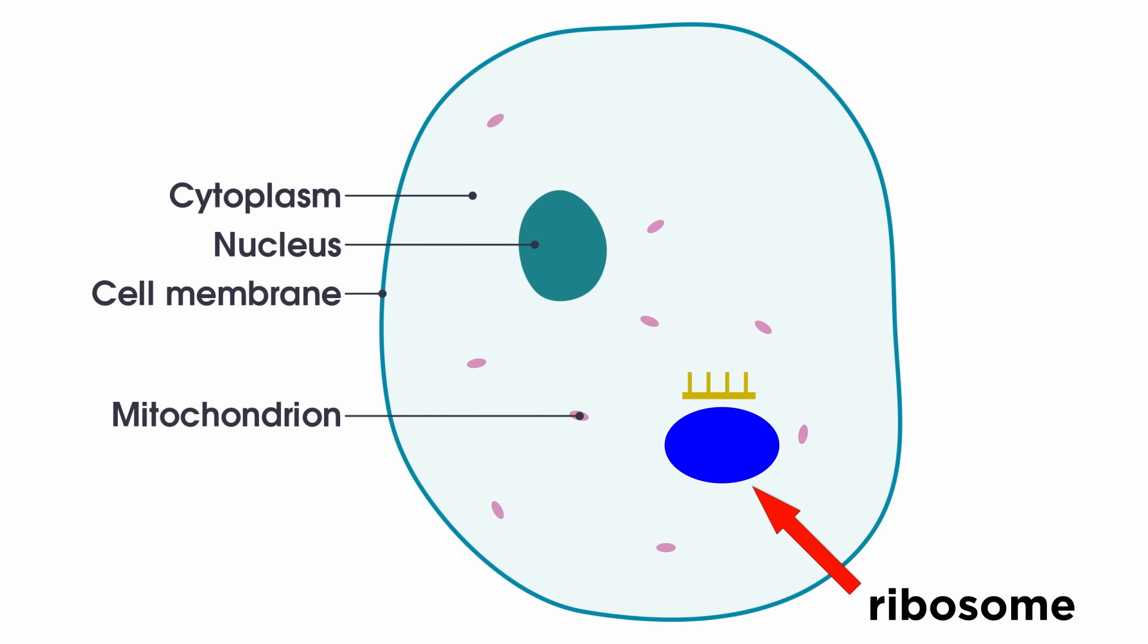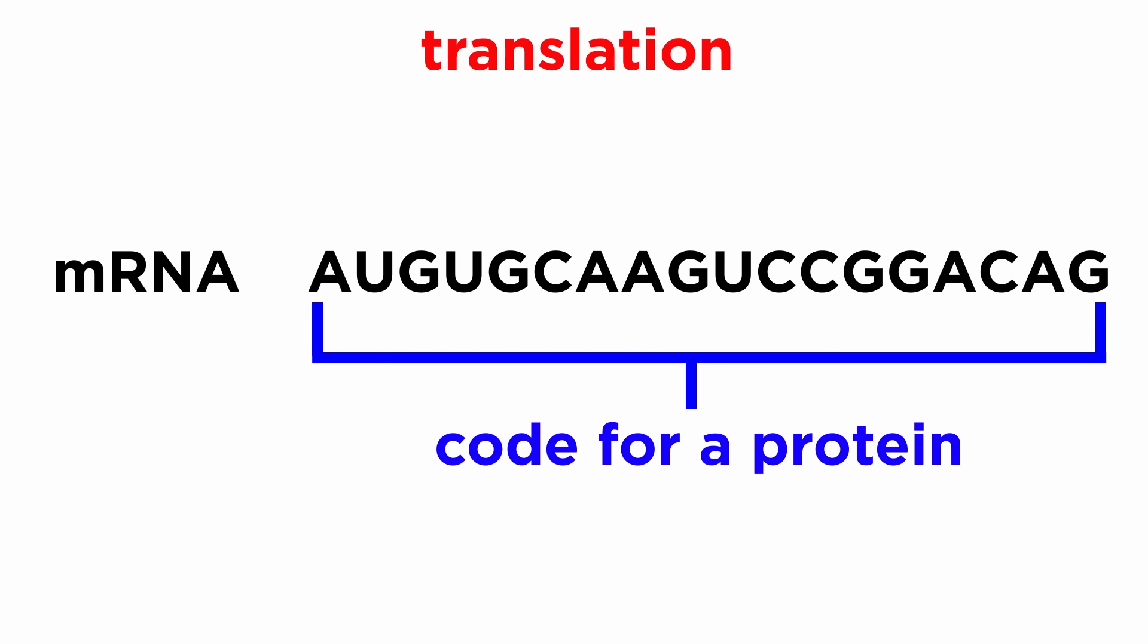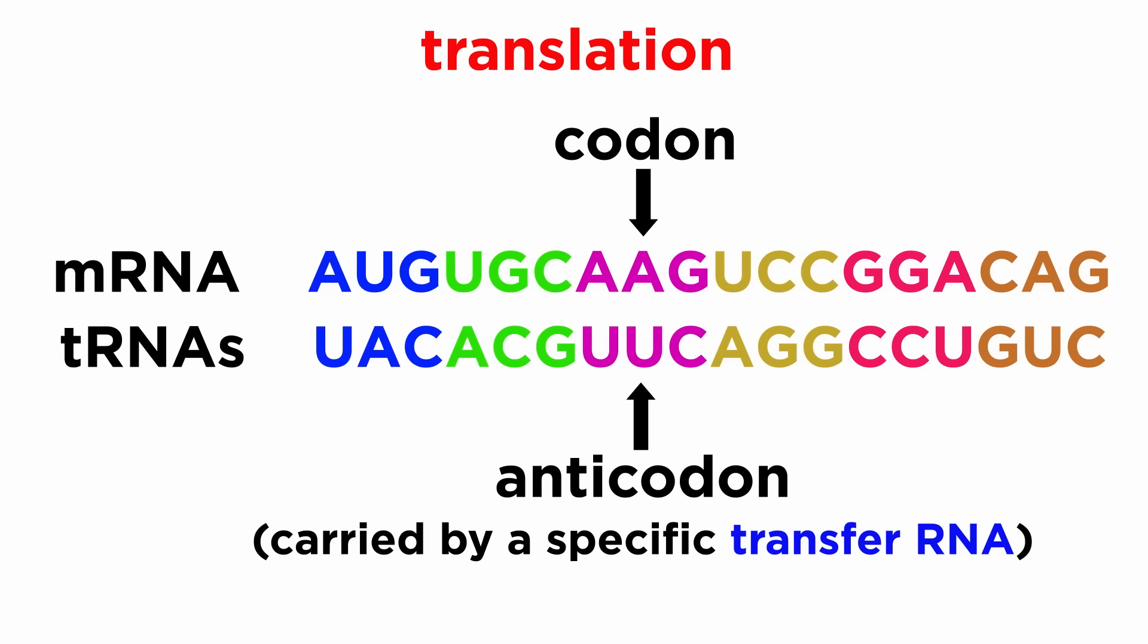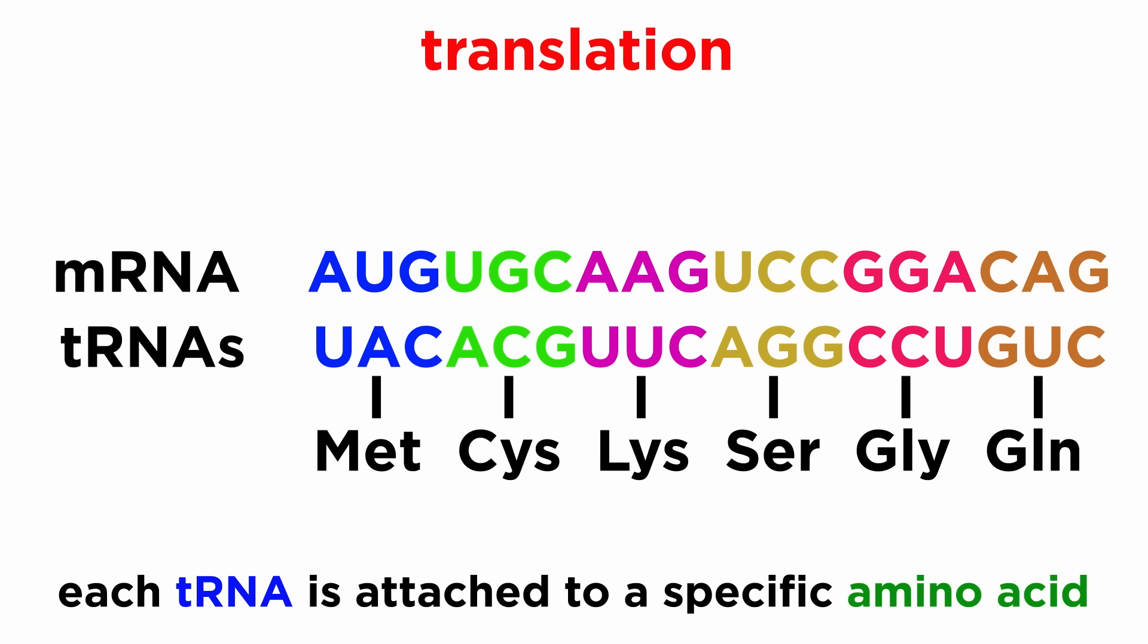This is where translation occurs. During translation, the mRNA acts as a code for a specific protein. This happens because each set of three bases on the mRNA, which we call codons, will code for a specific anticodon, which will be carried by a specific transfer RNA or tRNA, and each different tRNA is covalently linked to a particular amino acid.